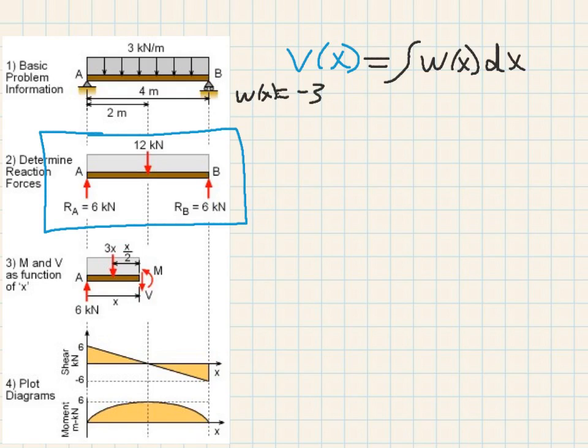And the reason I say it's negative 3, which is kilonewtons per meter, is because my distributed force is acting in a down direction, as you see. So having set that, integral of negative 3, DX plus 6.